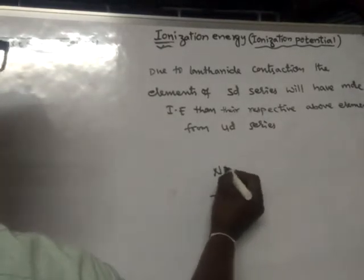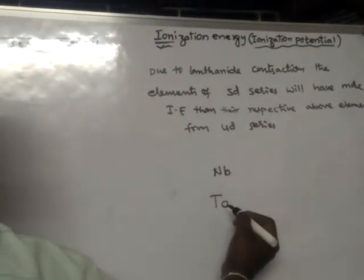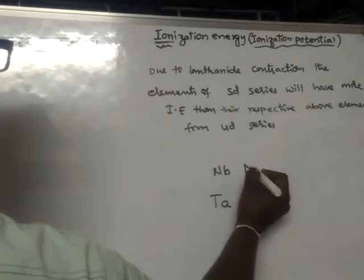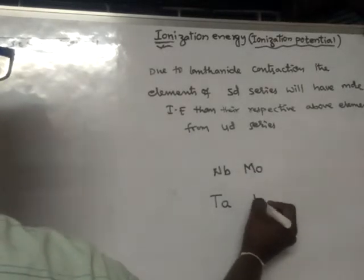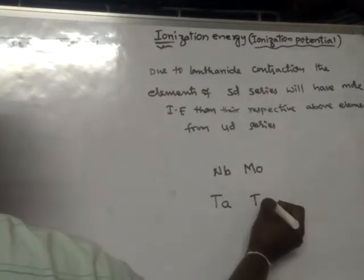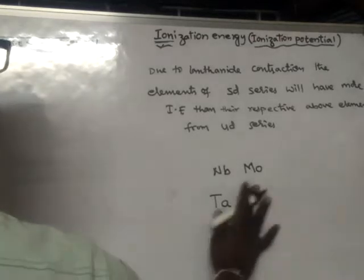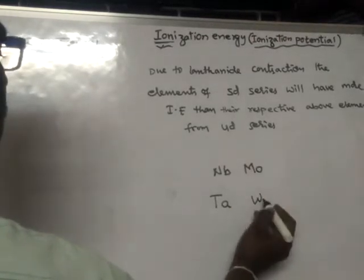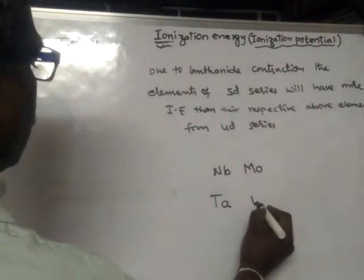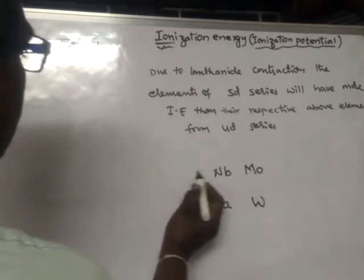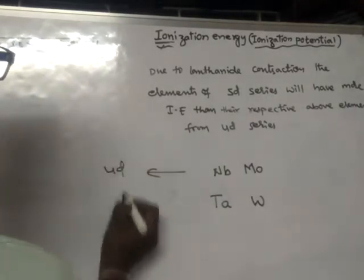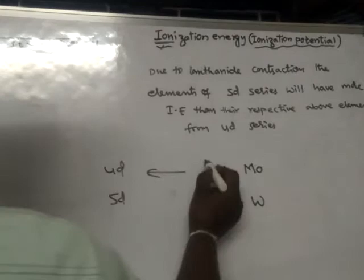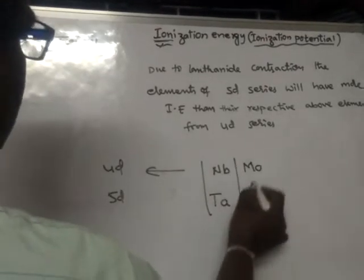For example, take niobium and molybdenum from the 4d series, and tantalum and tungsten from the 5d series. These are 4d elements and these are 5d elements.